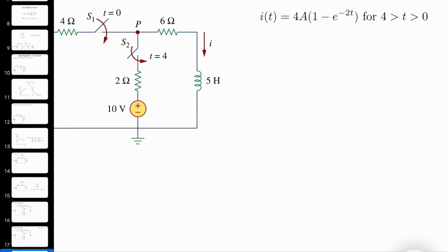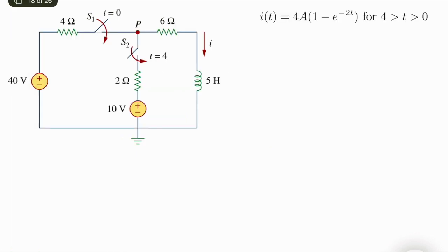Let's check the result — this is correct. So i(t) equals 4 amps times (1 minus e to the power minus 2t), since tau equals 1/2, the 2 goes next to t. But this is true from 0 to 4. We computed i∞ equals 4 amps, which is the steady-state value of this inductor with the first switch closed and second switch open.